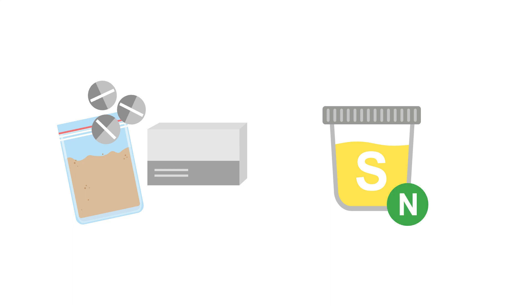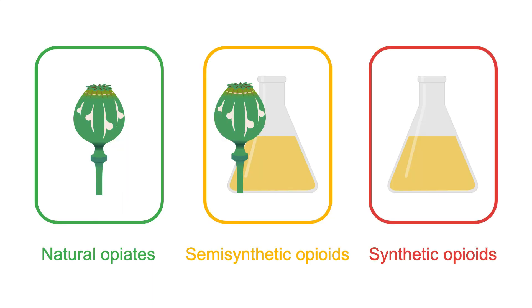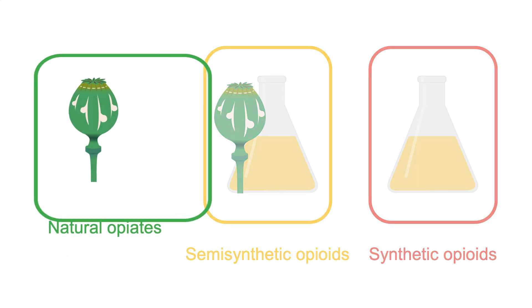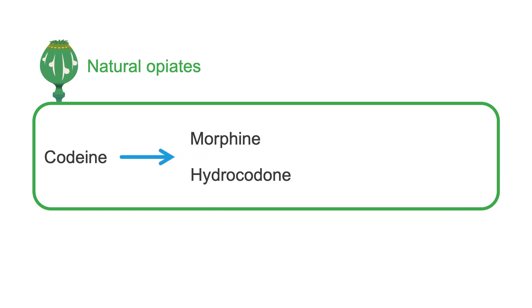There are a variety of substances from the opioid family that will cause a positive urine opiate screen, and a variety that will not. The naturally occurring opiates are codeine and morphine, which are both made directly from poppy plants. In mammals, codeine also metabolizes to morphine. Codeine also can metabolize to hydrocodone, and both hydrocodone and morphine can metabolize to hydromorphone. All these naturally occurring metabolites are considered opiates.